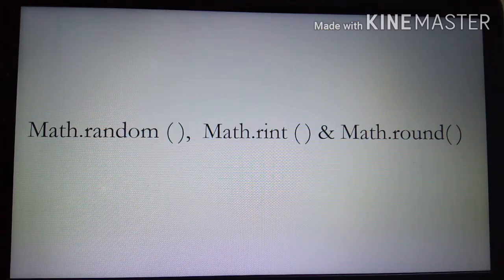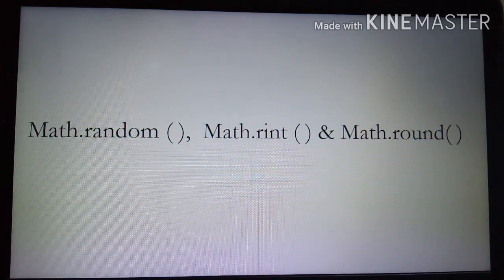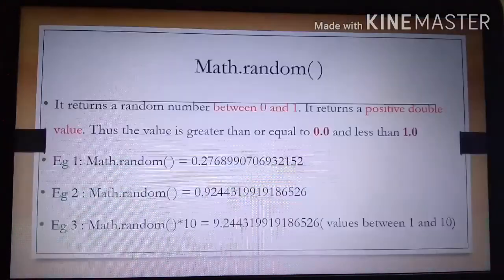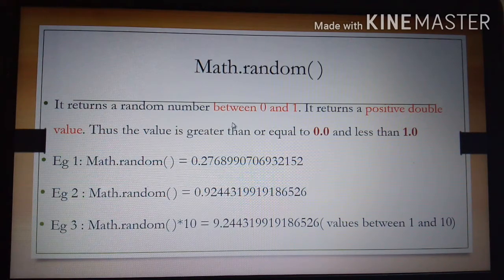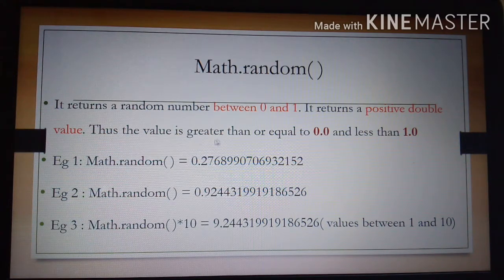In this video, let us see the working of random, rint, and round functions of the Math class. The first one is Math.random(). It returns a random number between 0 and 1 — a positive double value, so the value is greater than or equal to 0.0 and less than 1.0.